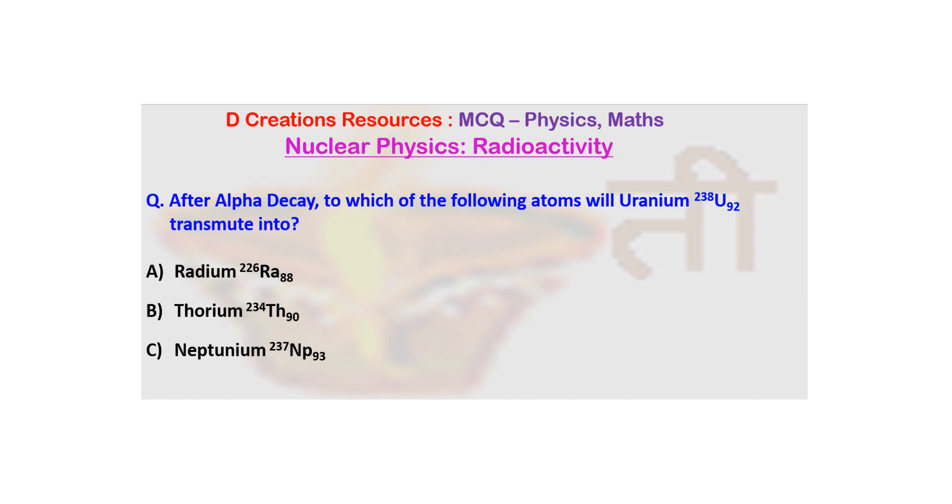If you have not seen the episodes, you can see them right now where we describe the concepts. Now today let's move on to a concept where there is uranium 238-92 and it has undergone alpha decay. So after alpha decay, to which of the following atoms will uranium 238-92 transmute into?